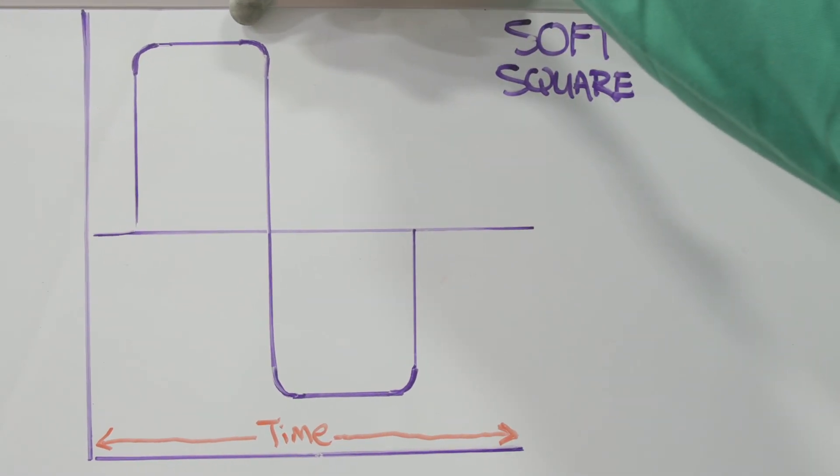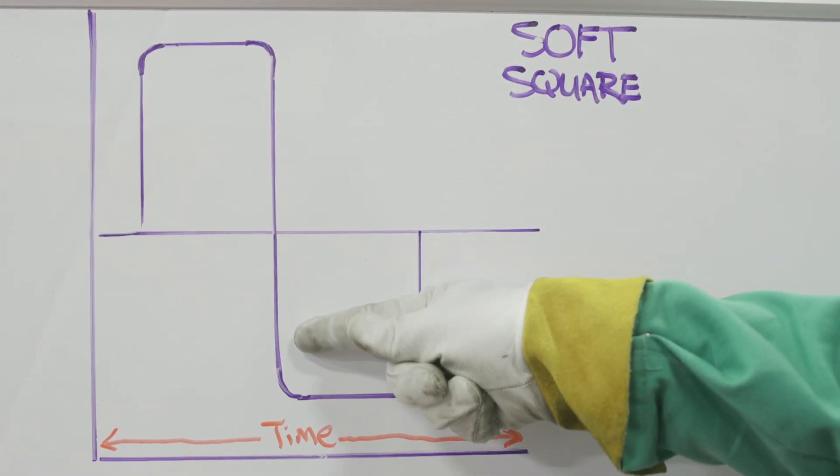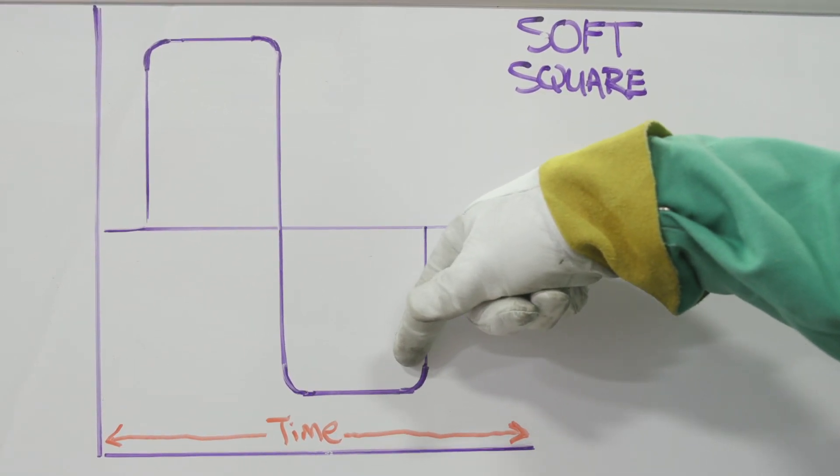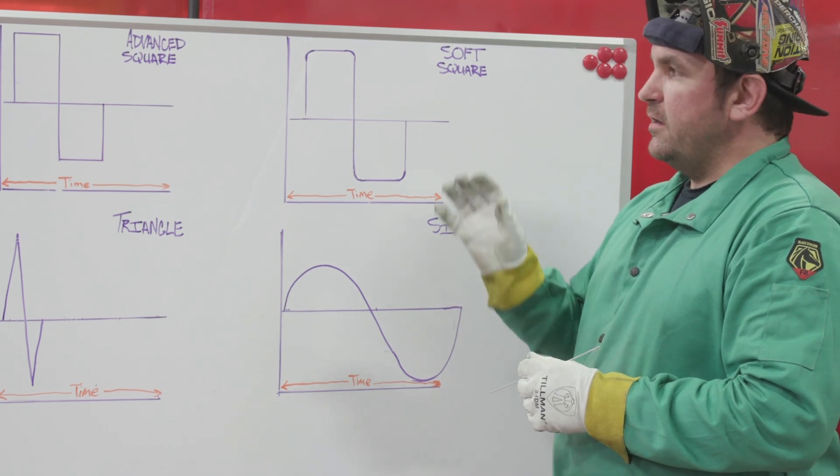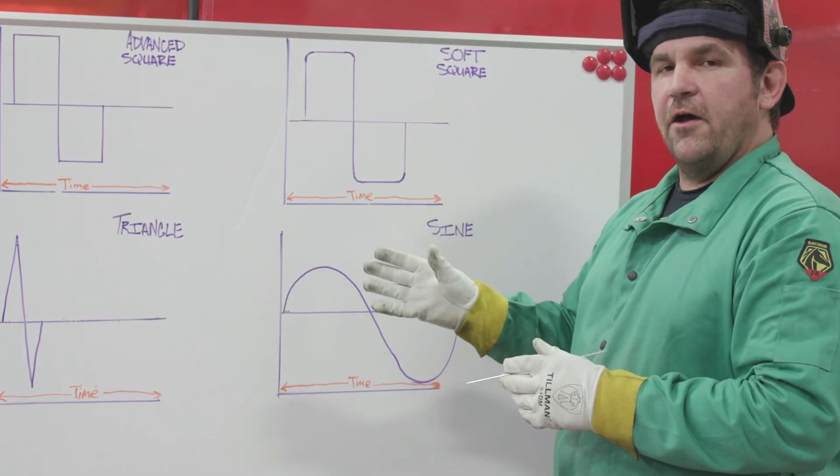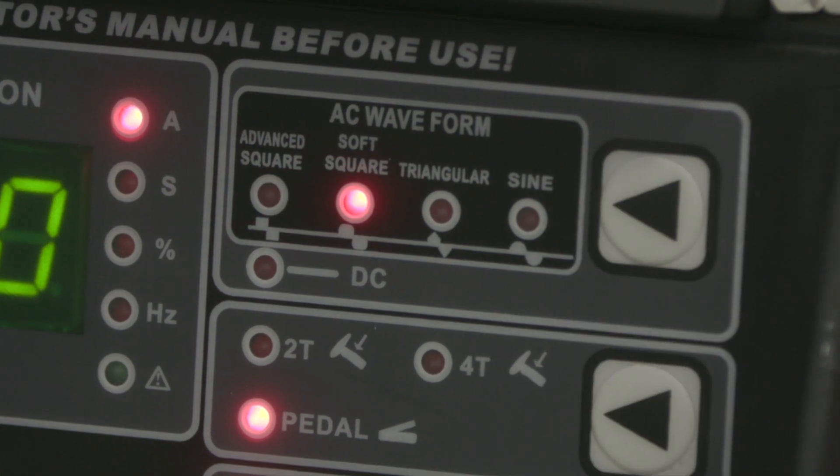But instead of a harsh transition down and up, we've got this slight roll into our transitions. And what this does, it creates a little softer arc, not quite as harsh of a sound when we're running. Now that we know what it does, let's go look at it.